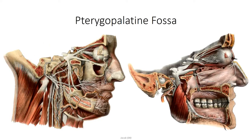The main component of the pterygopalatine fossa is the pterygopalatine ganglion. It should be noted that some older textbooks will refer to this as the sphenopalatine ganglion, in case you come across the term. It contains cell bodies for post-ganglionic parasympathetic neurons that travel throughout the head. In addition, it also serves as a convergence point for sympathetic innervation, as well as general somatic sensation, which then spread out to different destinations. You can think of the pterygopalatine ganglion as being like a major airport terminal, like O'Hare Airport, which provides connector flights to numerous destinations.